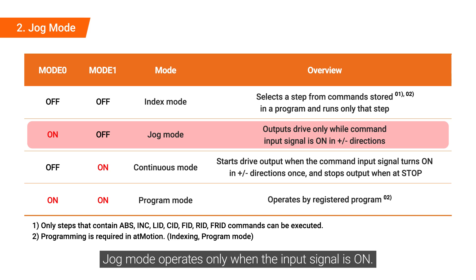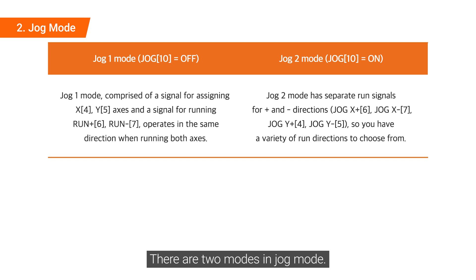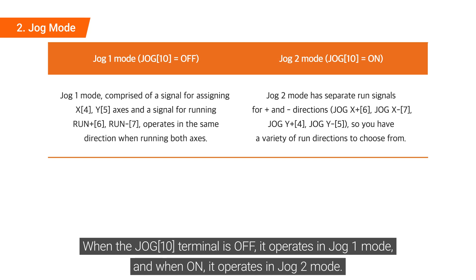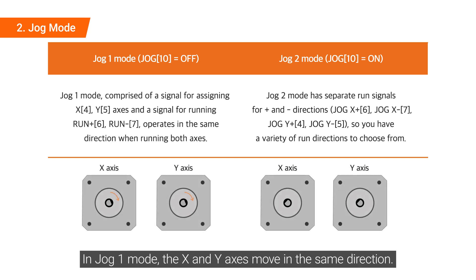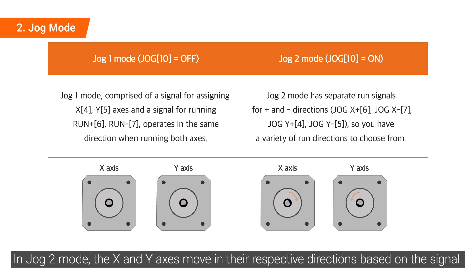Jog mode operates only when the input signal is on. There are two modes in jog mode: when the jog terminal is off, it operates in jog mode, and when on, it operates in jog-to mode. In jog mode, the X and Y axes move in the same direction. In jog-to mode, the X and Y axes move in their respective directions based on the signal.